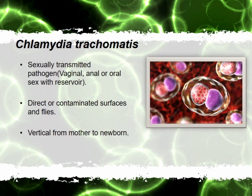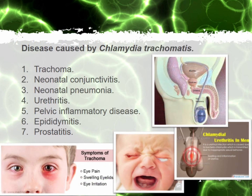This one is called Chlamydia trachomatis. This sphere-shaped bacteria is transmitted when you have sexual intercourse with an infected partner. It can be found around the vaginal or anal tract. Newborn babies sometimes also get infected during birth. Chlamydia trachomatis can also be carried by flies. It is not a lethal one but can cause several complications such as trachoma — which is pain in the eyes with swollen eyelids — conjunctivitis, urethritis in men causing extreme pain in the urethra, and also epididymitis and prostatitis, which is pain in the epididymis and prostate in the male reproductive organ.